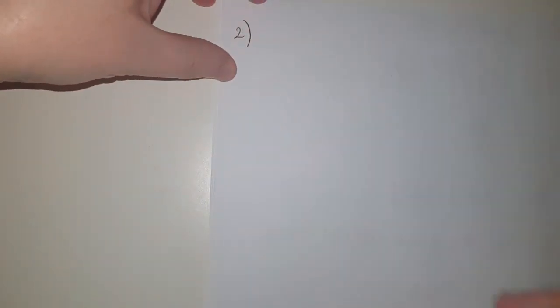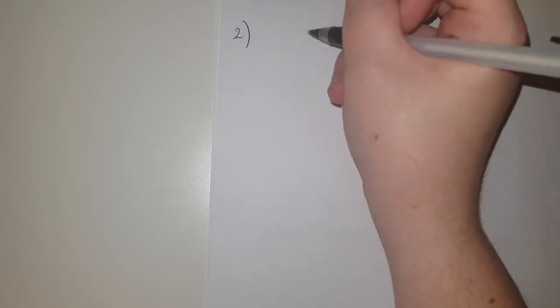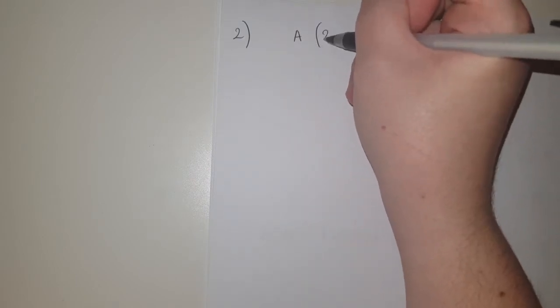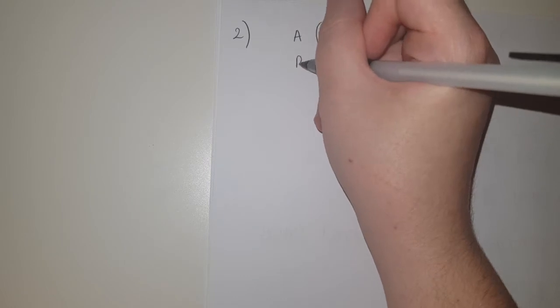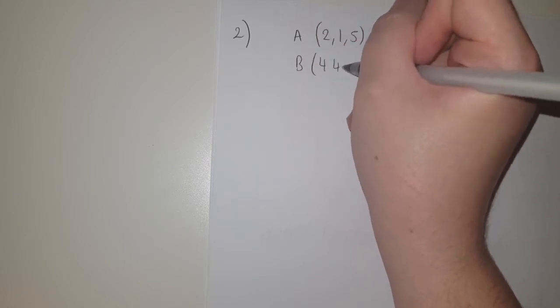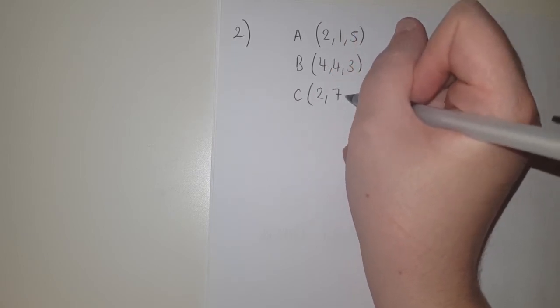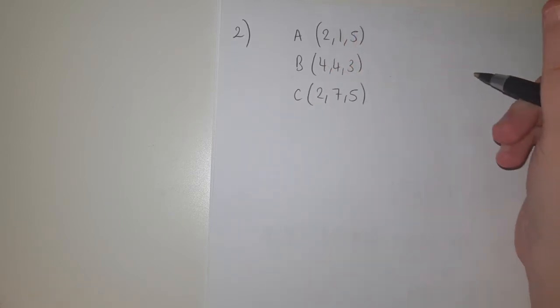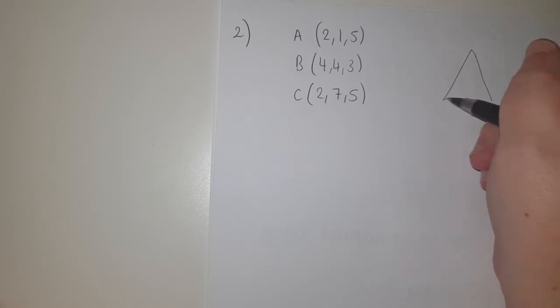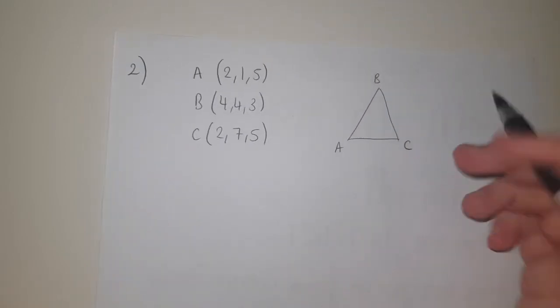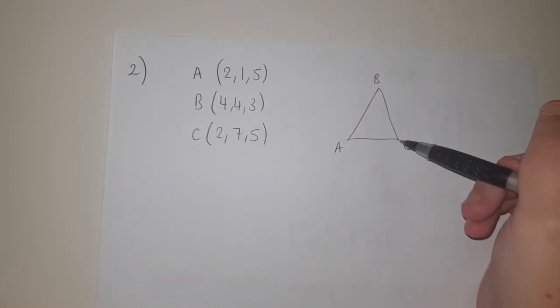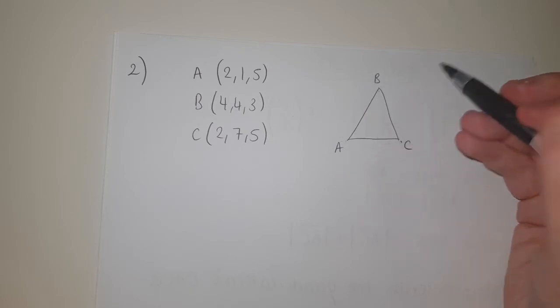Question 2: we have points A = (2, 1, 5), B = (4, 4, 3), and C = (2, 7, 5). We want to show triangle ABC is isosceles. To do that I need the lengths of AB, BC, and AC and show that two of those sides are the same length.